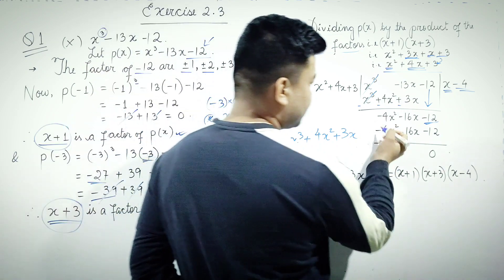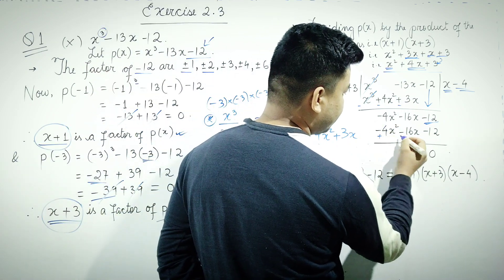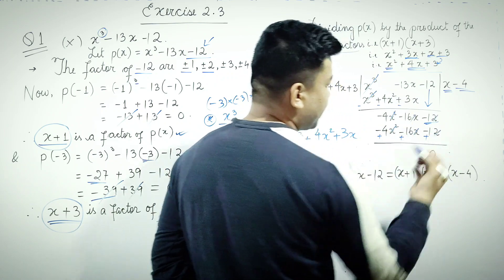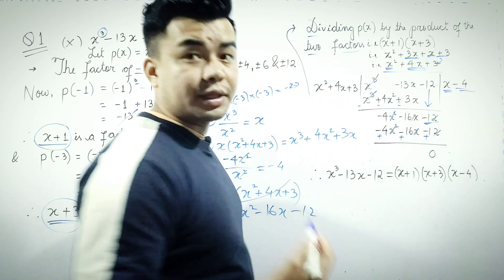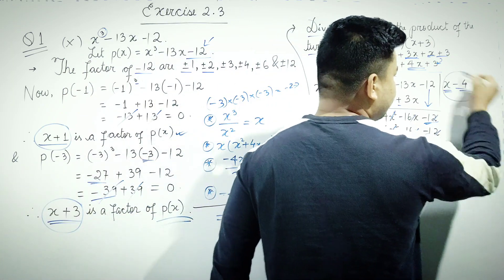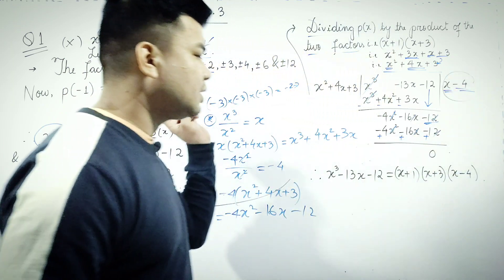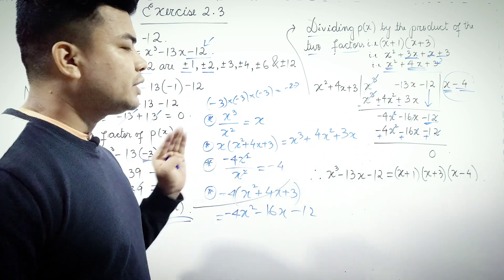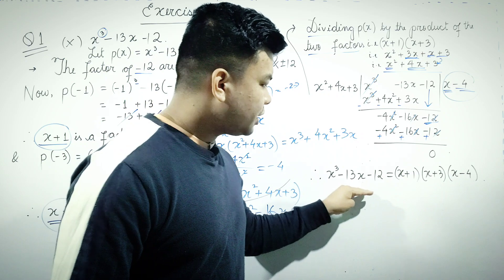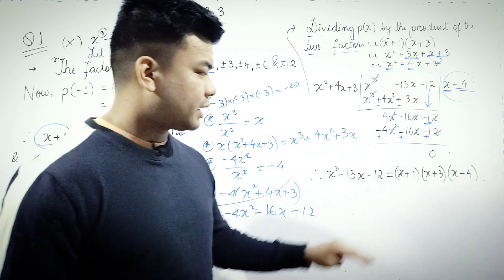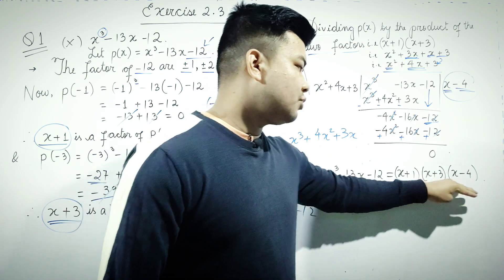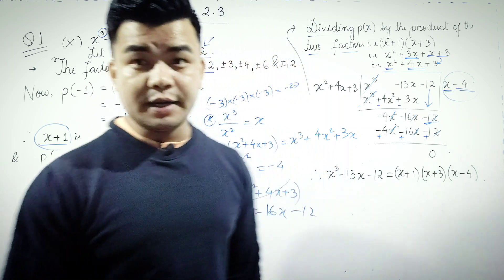The remainder is 0, which confirms that x minus 4 is also a factor. Therefore, the polynomial x cubed minus 13x minus 12 is fully factorized as (x plus 1)(x plus 3)(x minus 4).